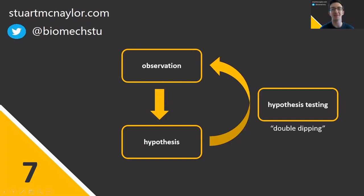Mistake seven is to conduct a circular analysis in which a hypothesis is tested on the same data set that led to the generation of the hypothesis in the first place.